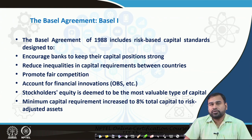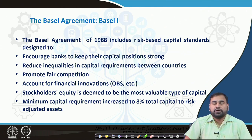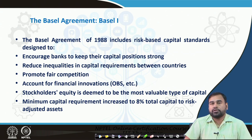According to this norm, equity — common equity or the owner's own capital invested in the particular bank — is the most valuable type of capital. According to Basel 1, the minimum capital requirement should be 8 percent, meaning the capital adequacy ratio should be 8 percent or more.